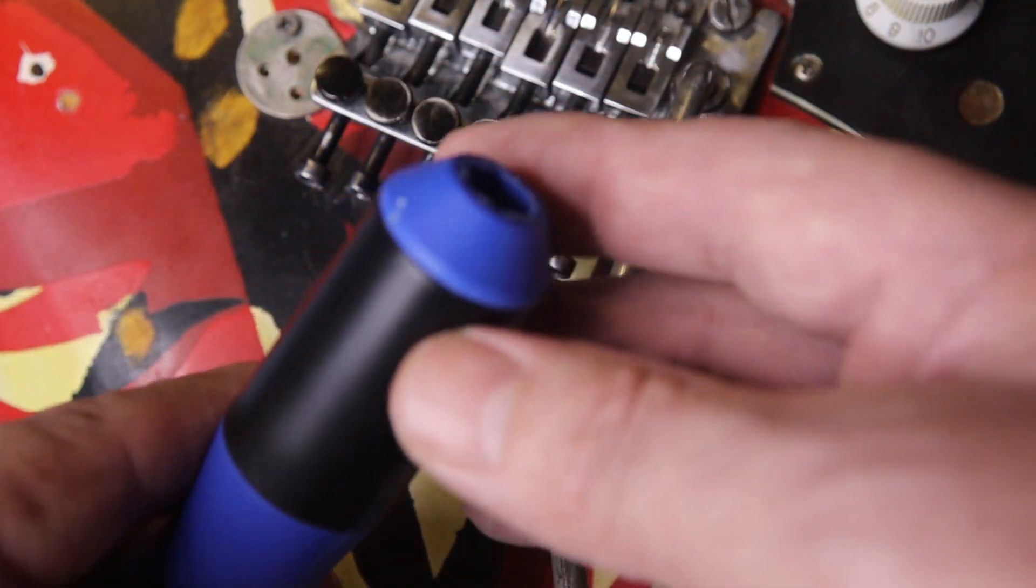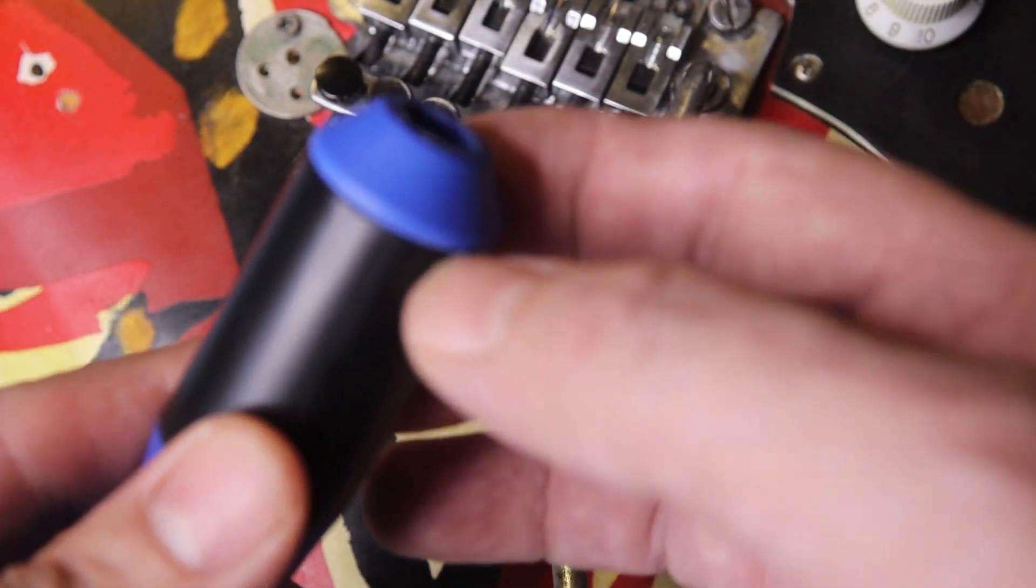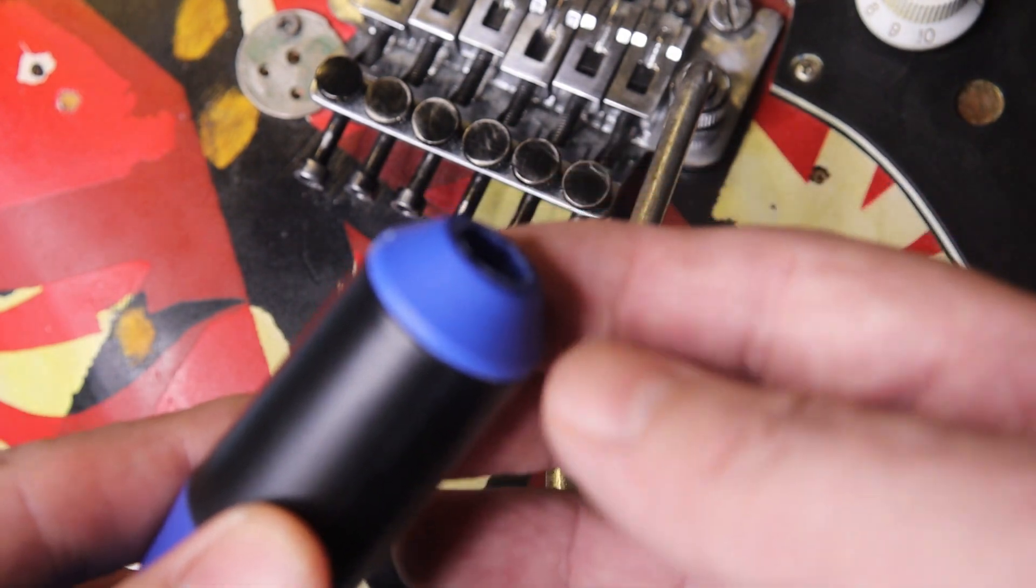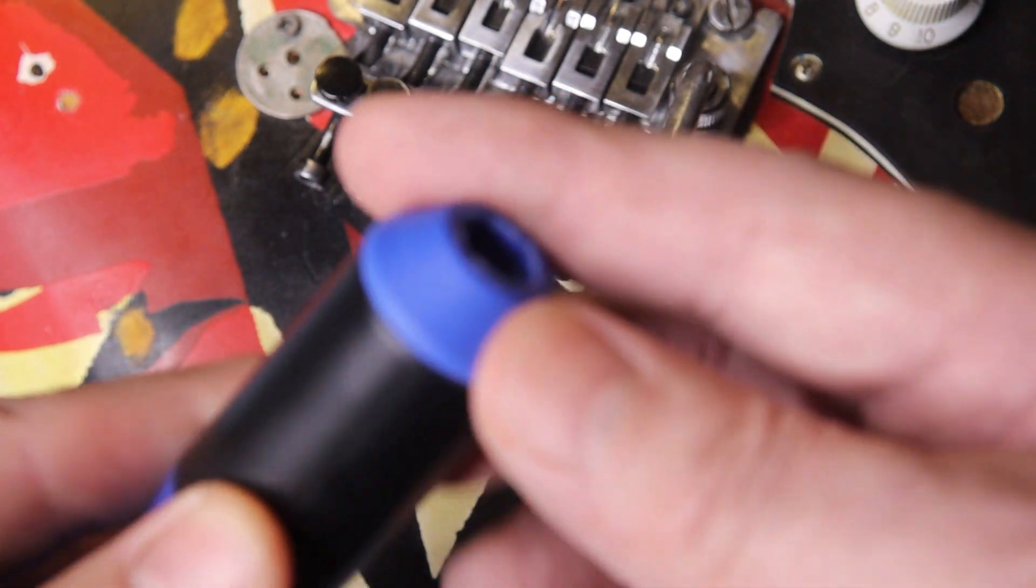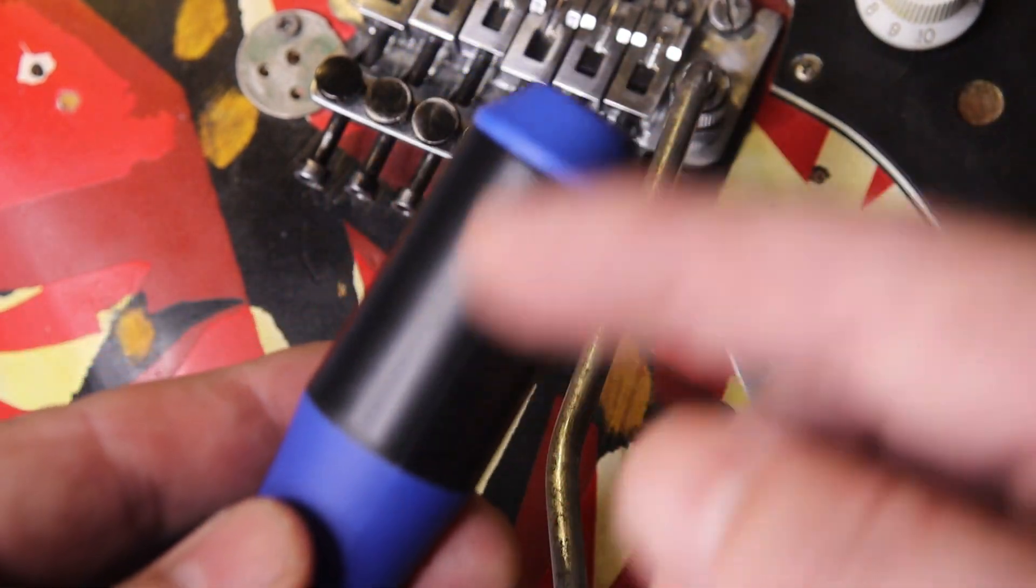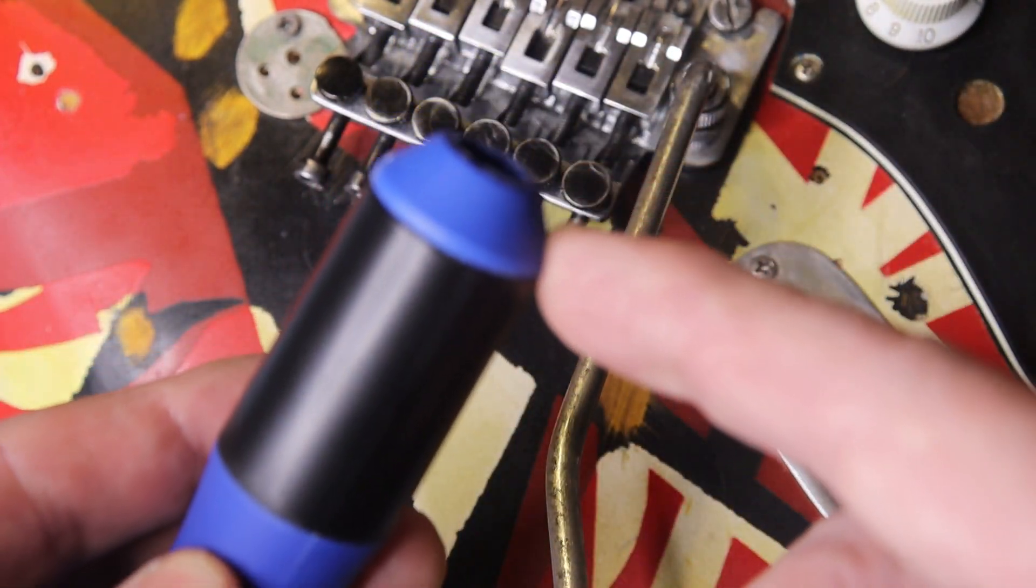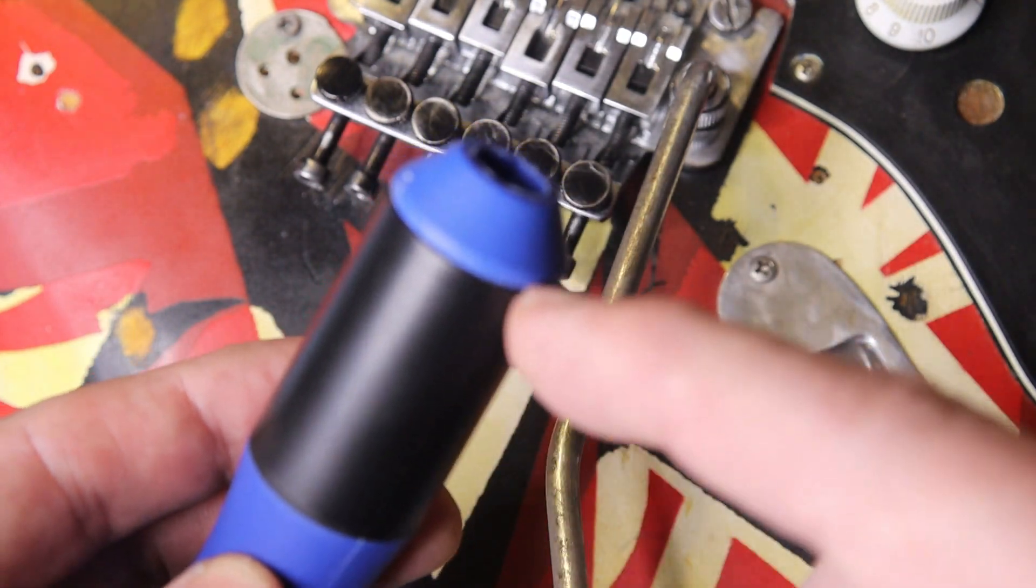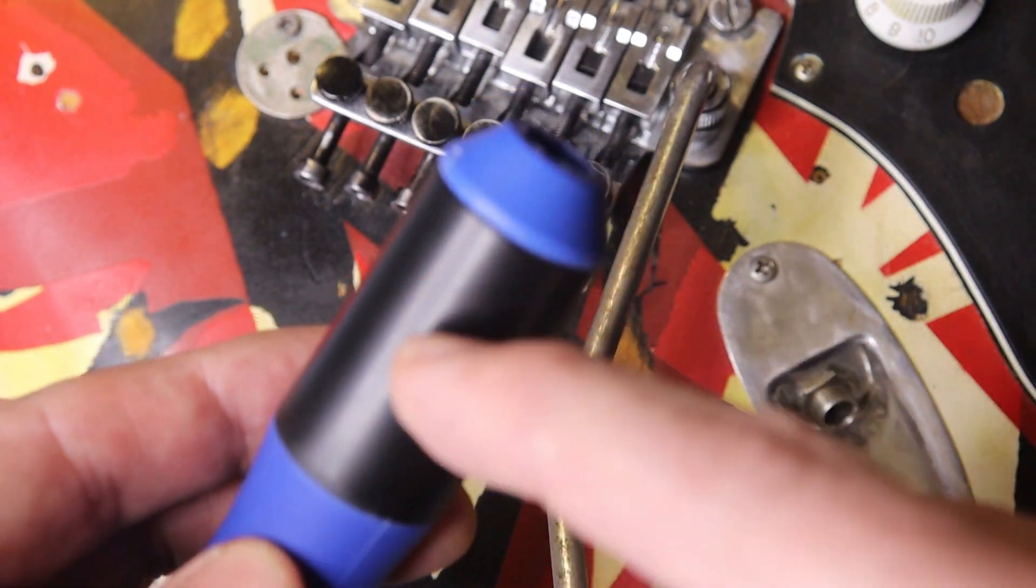The thing that I am kind of disappointed in, as advertised, this right here, the end of the winder, was supposed to come off so you can put your string pins in here if you've got an acoustic guitar, to hold them.